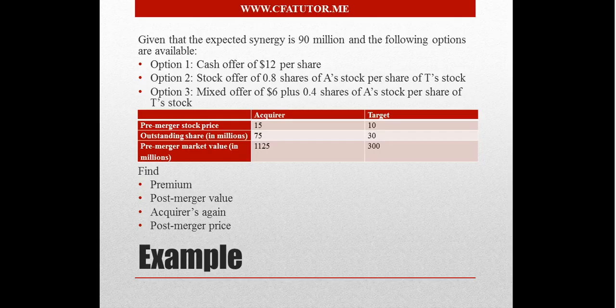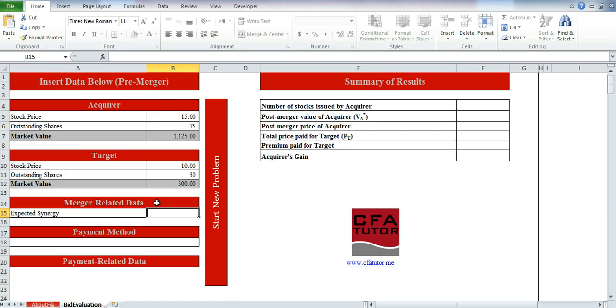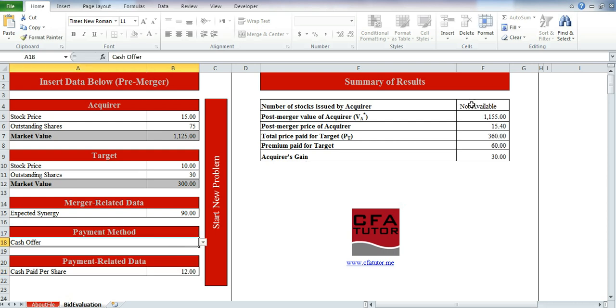And if that's correct, yes. And then the expected synergies were $90 and we'll evaluate each of the three methods that we have. So first of all, we will choose a cash offer and we will have to enter, all that we have to do is enter over here, a cash offer of $12. And we have the information over here.